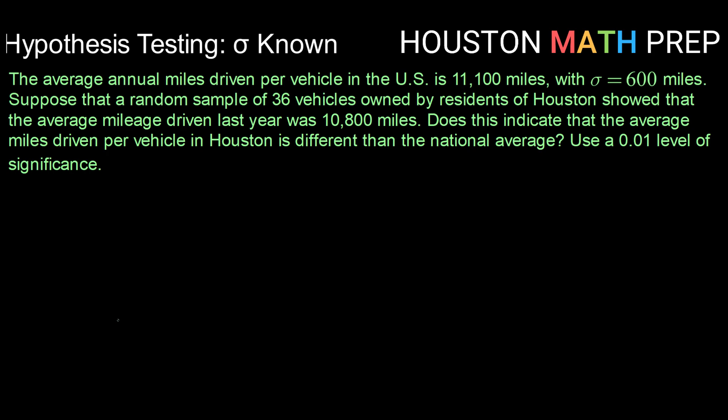So let's say that the average annual miles driven per vehicle in the U.S. is known to be 11,100 miles, with a population standard deviation of 600 miles. Suppose that a random sample of 36 vehicles owned by residents of Houston showed that the average mileage driven last year was 10,800 miles. Does this indicate that the average miles driven per vehicle in Houston is different than the national average? Use a 0.01 level of significance.